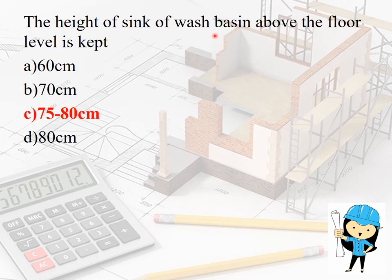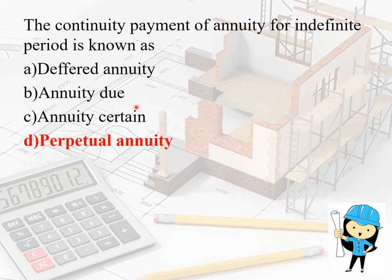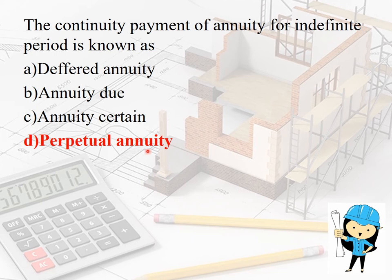The height of a sink or wash basin above floor level is 75 to 80 centimeters. The continuous payment of annuity for an indefinite period is known as perpetual annuity. Annuity certain is defined as the amount of annuity paid for a definite number of years. To summarize: indefinite period = perpetual annuity; definite period = annuity certain.